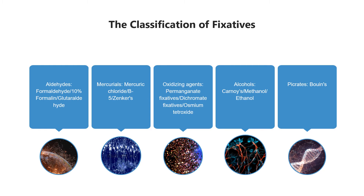Three: Alcohols — alcohols, which are protein denaturants, are generally not used for tissues because they cause too much brittleness and hardness. However, they are very good for cytologic smears as they act quickly and give good nuclear detail. Carnoy's fluid is generally used for specific purposes. Ethyl alcohol is used as a fixative for enzymes. Four: Oxidizing agents — oxidizing agents cross-link proteins but cause extensive denaturation. Some have specialized applications but are used very infrequently.